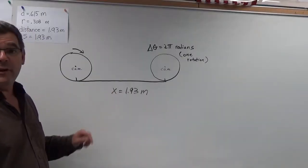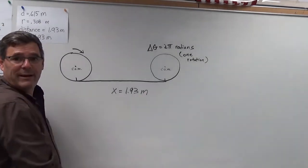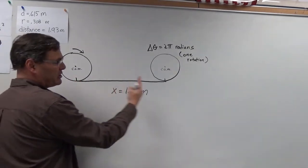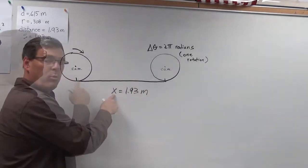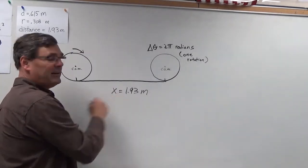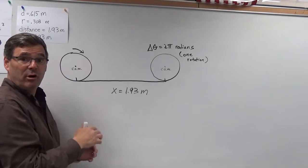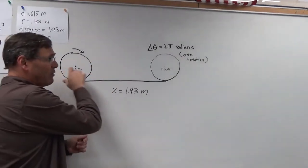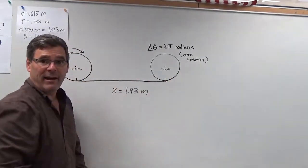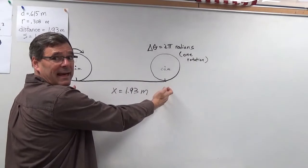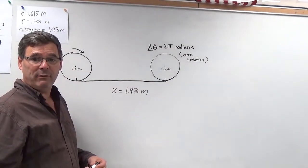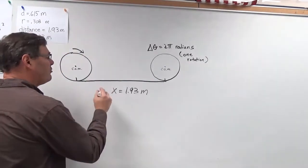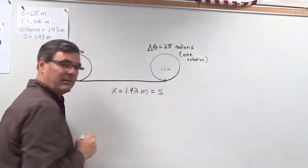The wheel moved across the counter 1.93 meters — that is the distance the center of mass moved. We'll call that linear motion X, so X equals 1.93 meters. If I were to put paint along the edge of the wheel and roll it across the ground, it would leave a line of paint 1.93 meters long after one rotation. That is the arc length subtended by the rotation of the disc, so this is also equal to arc length S.